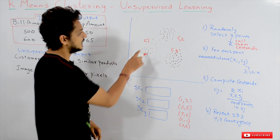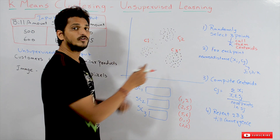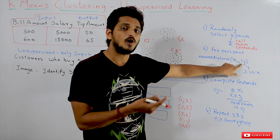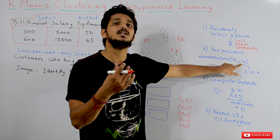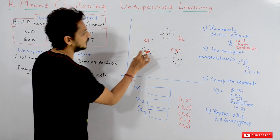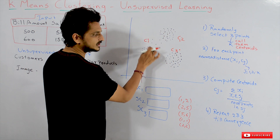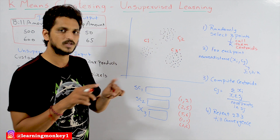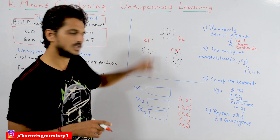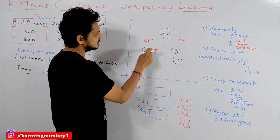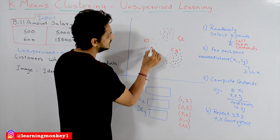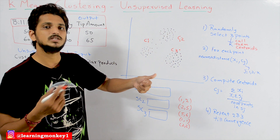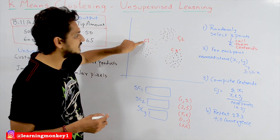The black points are called data points. For each data point Xi, we calculate the distance to each centroid Cj. We can use Euclidean distance — square root of (x1 minus x2) squared — or Manhattan distance. Here we use Euclidean distance. We calculate the distance from each data point to C1, C2, and C3, and whichever centroid has the minimum distance, that data point belongs to that centroid. For example, if this point L1 is nearest to C1, then L1 belongs to centroid C1.